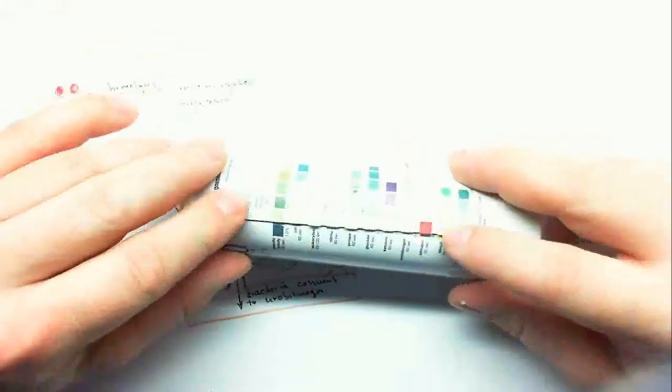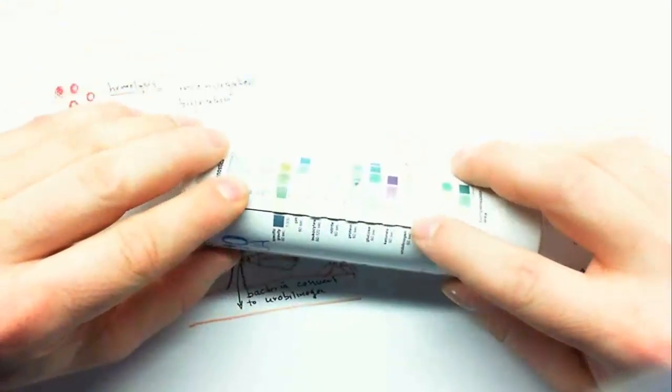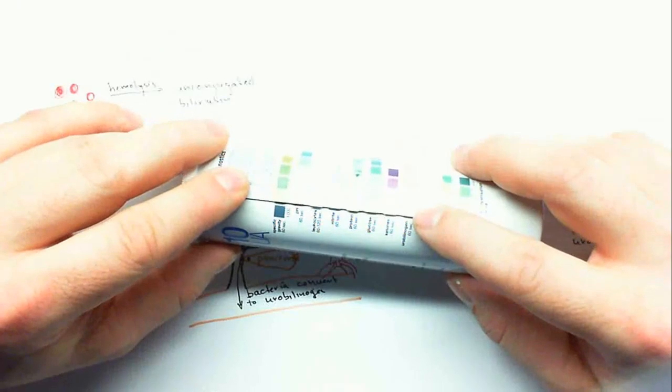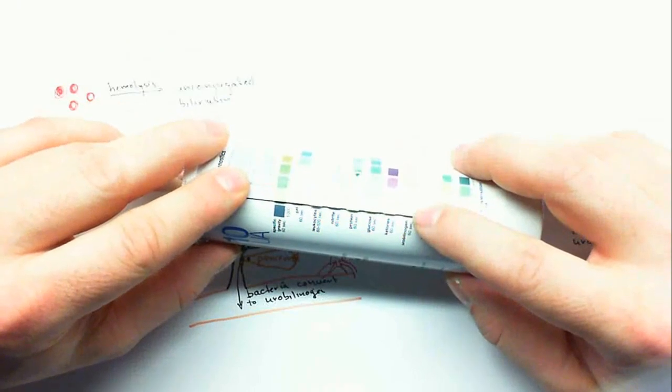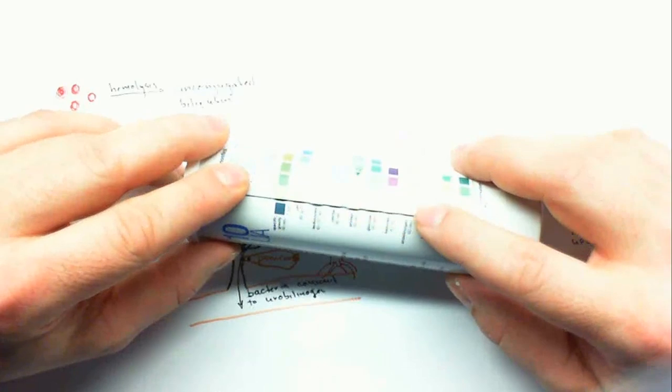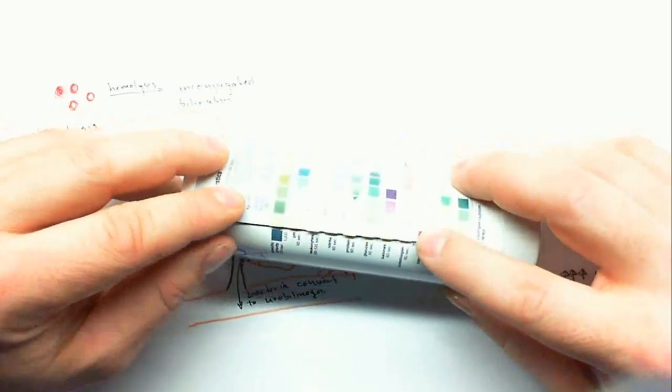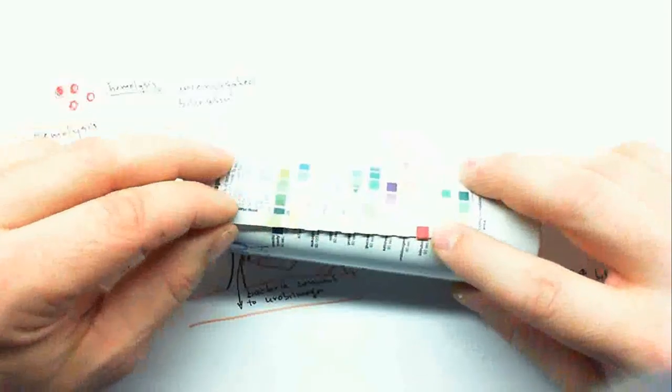In this stick, there's high bilirubin and low urobilinogen. There should be urobilinogen on the stick, and its absence suggests an inability to get conjugated bilirubin into the gut. In fact, the increase in bilirubin confirms this, and so this is a test that's positive for biliary obstruction.